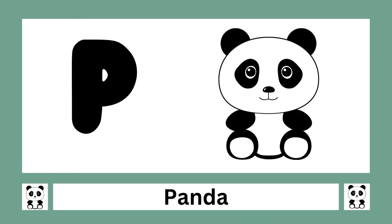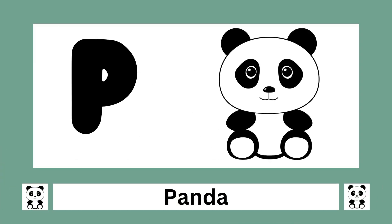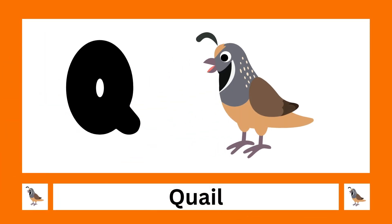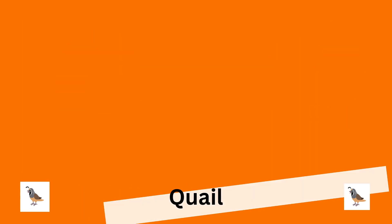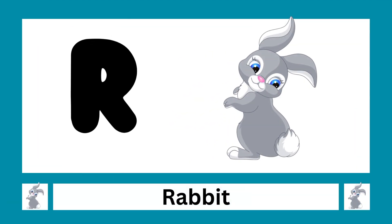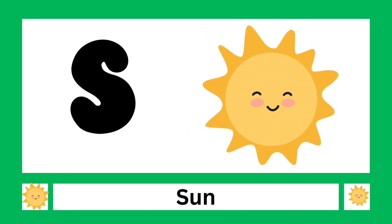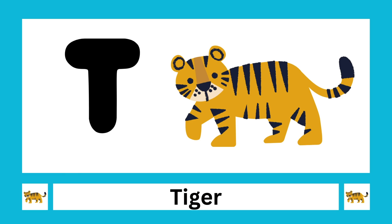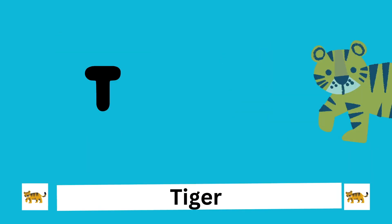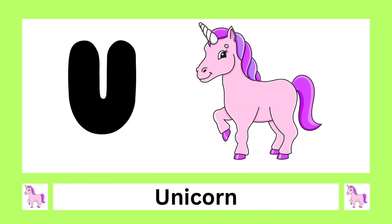P is for panda, Q is for quill, R is for rabbit, S is for sun, T is for tiger, U is for unicorn.